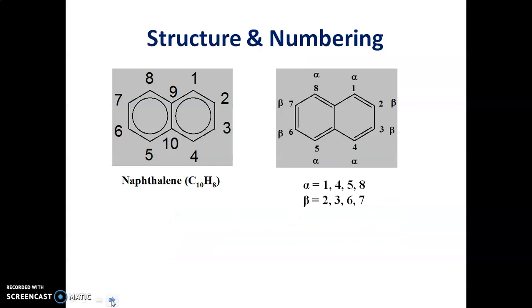Let us discuss the structure and numbering of naphthalene. Naphthalene is the first member of condensed polynuclear hydrocarbons in which the two benzene rings are fused with each other at ortho position. It exists as the largest constituent of coal tar. The molecular formula of naphthalene is C10H8.